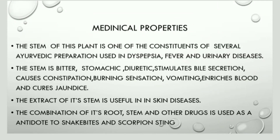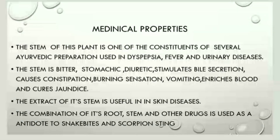Now let us discuss the medicinal properties. The most useful part of the plant is the mature stem, which is used in curing several diseases ranging from fever to urinary diseases. The stems are bitter in taste and used as a stomachic for stomach problems. It is a diuretic, meaning it increases urine output. It stimulates bile secretion and is helpful against burning sensation, vomiting; it enriches the blood and cures jaundice. This stem is also useful for many skin diseases.